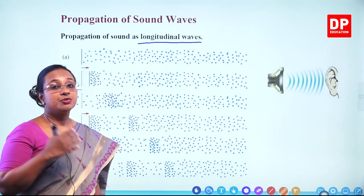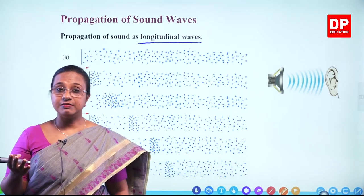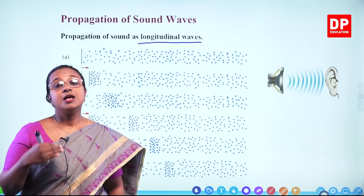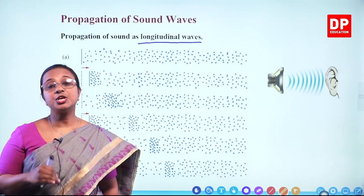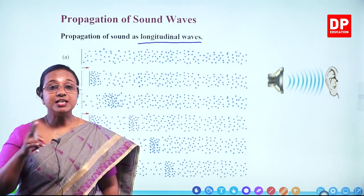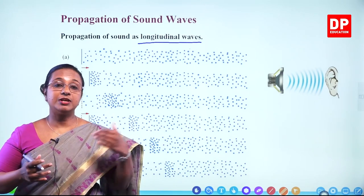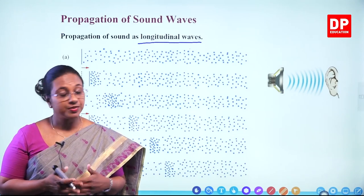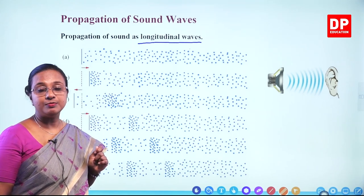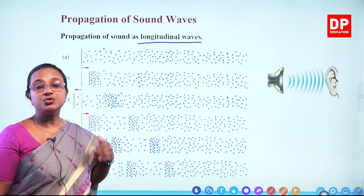Now let's look at the propagation of sound waves. In mechanical waves, particles of the medium vibrate. Depending on the direction of movement of the medium's particles relative to the direction of the wave — when these two are parallel, we call them longitudinal waves; if perpendicular, it is a transverse wave. In sound, the waves are longitudinal waves, and now we will see how these waves are produced and transmitted.